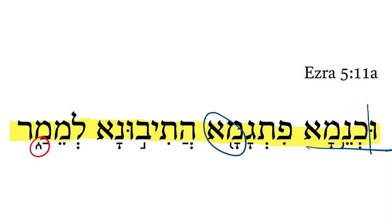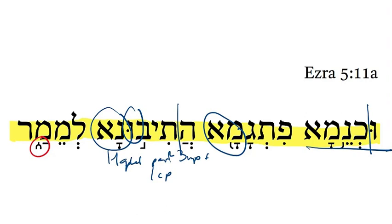Next, from the hey prefix, this is going to be a hafel perfect. We see it is a third person masculine plural plus a first person common plural suffix. The verbal root is tavav-bet, which reminds us of the biblical Hebrew shuv — the return verbal root. So: 'they caused us to return.'